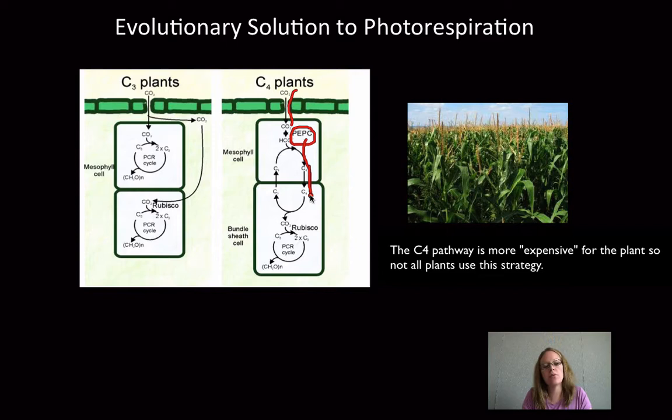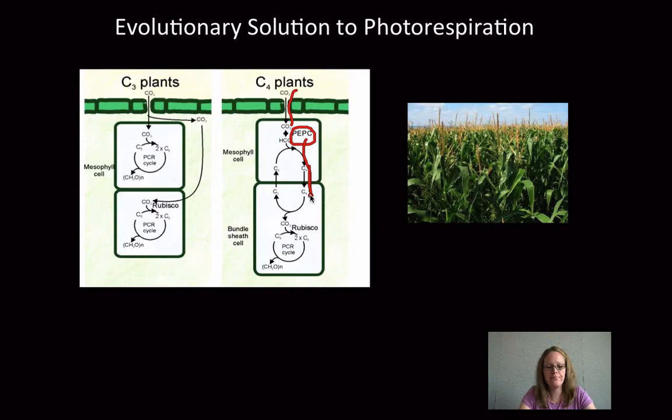C3 plants, not so much when it gets too hot. They're going to close their stomates. They're going to shut down. They're not going to be able to produce the glucose that they need, and they're going to start to increase photorespiration, which is detrimental to the plant.